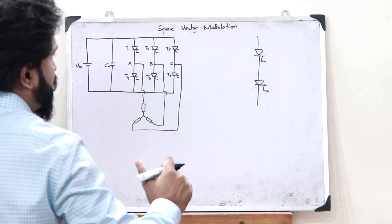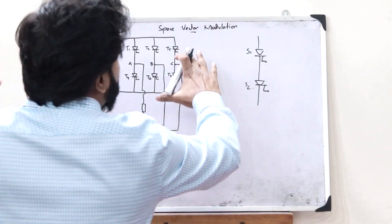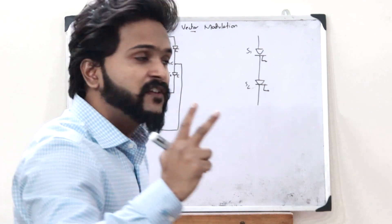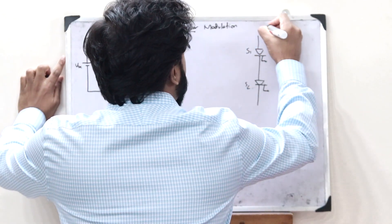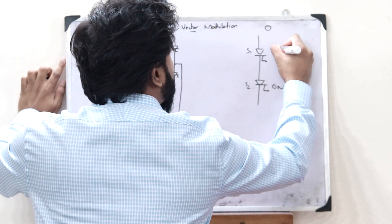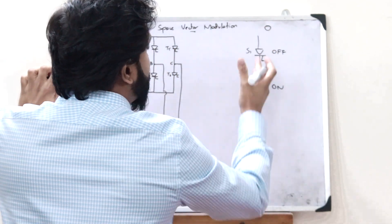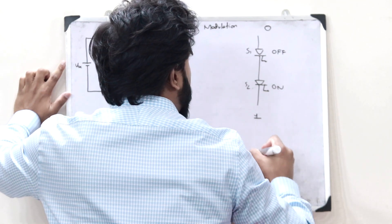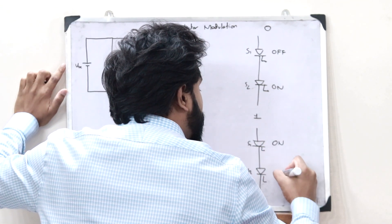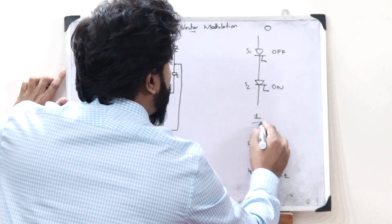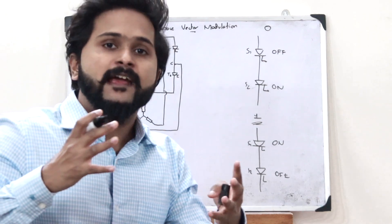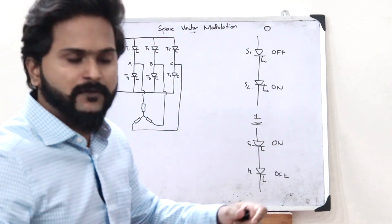We have 2 SCRs, say S1 and S2. In the case of Space Vector Modulation, there are 2 main conditions. In condition 0, this switch is ON and this switch is OFF. In condition 1, this switch is ON and this switch is OFF. These are the 2 conditions that we use in Space Vector Modulation.